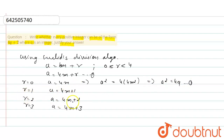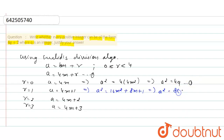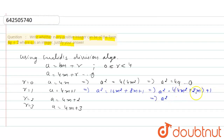In the same manner, if we square A equals 4m plus 1, we get a² equals 16m² plus 8m plus 1. If we take 4 as common, we get 4(4m² plus 2m) plus 1. So if we put 4m² plus 2m as q, the form becomes a² equals 4q plus 1.